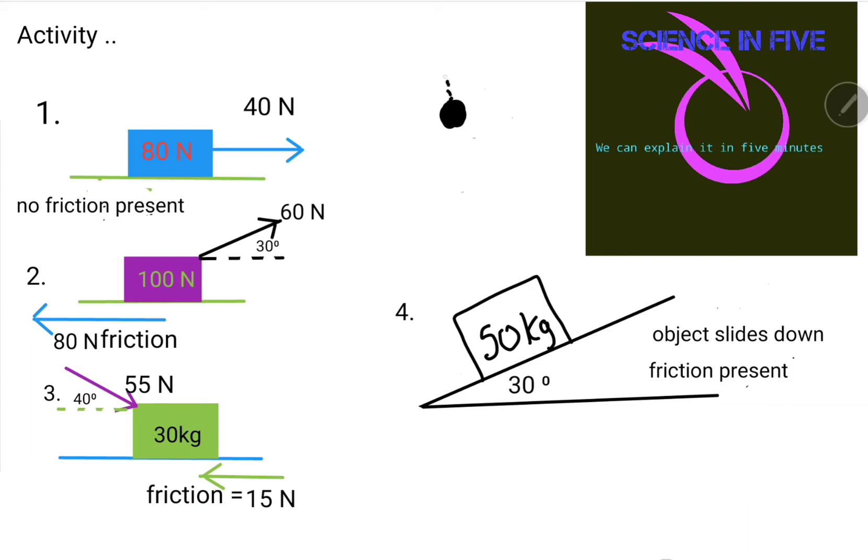Remember, a free body diagram is basically mimicking a Cartesian plane. So there is the 40 newtons going in that direction, and there is the weight of the object which we normally label as Fg. And there is the normal force which acts whenever there is a surface. Whenever there is a surface you get a normal force, no surface no normal force.